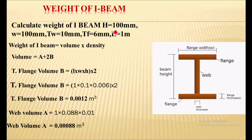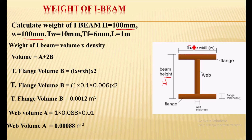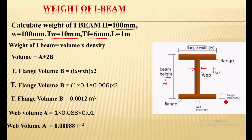Calculate the weight of I-beam. H is the height which is 100 mm. W is the width of the flange which is 100 mm. TW is the web thickness which is 10 mm. TF is 6 mm, that is the flange thickness. The total length of this I-beam is 1 meter.